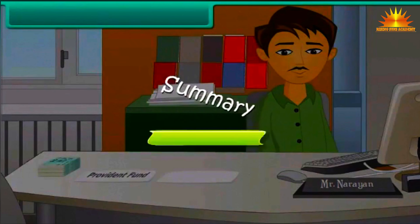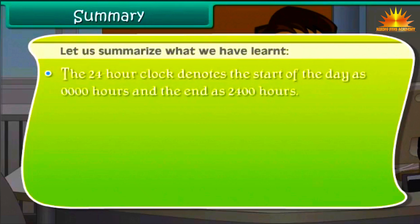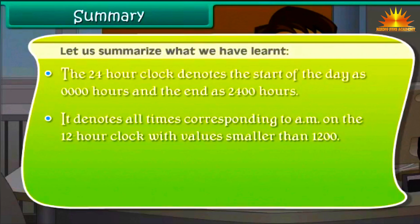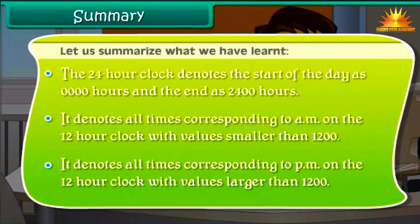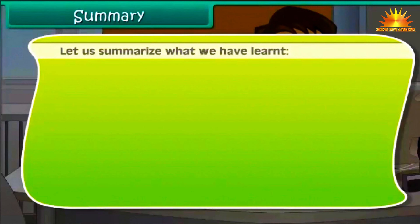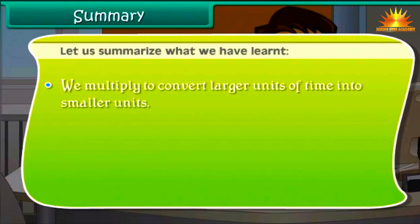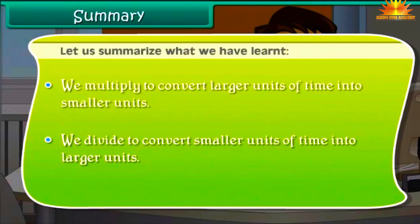Summary: The 24-hour clock denotes the start of the day as 0000 hours and the end as 2400 hours. It denotes all times corresponding to a.m. on the 12-hour clock with values smaller than 1200, and all times corresponding to p.m. with values larger than 1200. We multiply to convert larger units of time into smaller units, and we divide to convert smaller units of time into larger units.